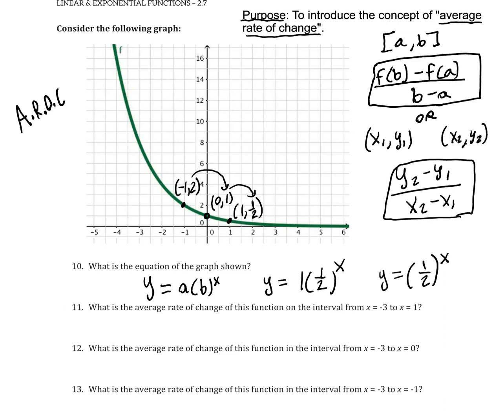And that's important. That allows us to answer questions like what we're going to be answering in number 11. So to answer question 11, we have to find the average rate of change of this function from x equals -3 to 1. So we need to first find the coordinates of this point here at -3, and that's (-3, 8).